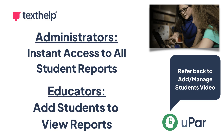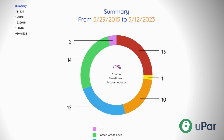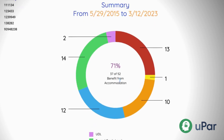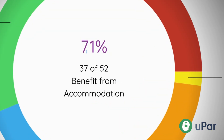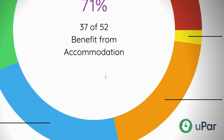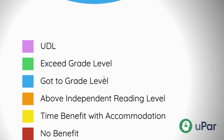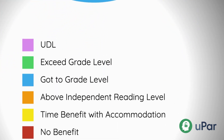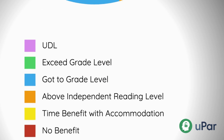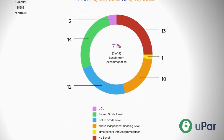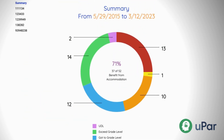Once you've got your students added, it's time to explore the data. In the group summary circle data, you'll see the percentage of students who benefited from a read-aloud accommodation, as well as the total number of students who received accommodations. The students will be color-coded based on their results.